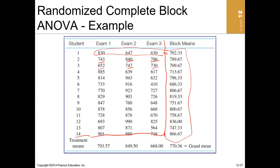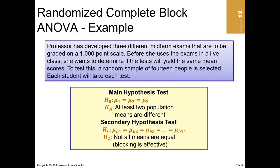When you find the average of all the block means, you get the grand mean. You can also find the grand mean by averaging the individual group means — both approaches yield the same result. The grand mean here is 770.36.